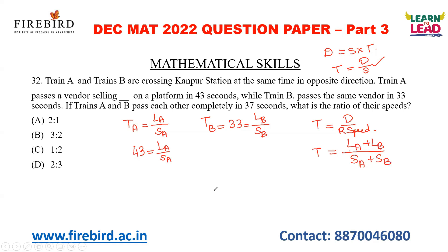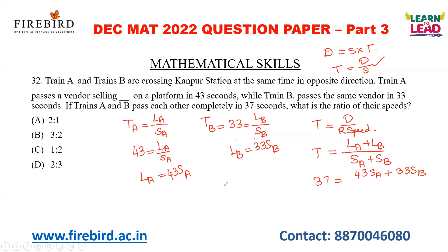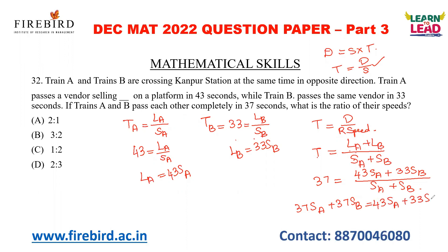They are asking: what is the ratio of their speeds? Represent length of Train A and Train B in terms of speed. From the earlier equations: length of Train A = 43 × speed of Train A, and length of Train B = 33 × speed of Train B. Substituting: (43 × speed of Train A + 33 × speed of Train B) / (speed of Train A + speed of Train B) = 37. Cross-multiplying: 37 × speed of Train A + 37 × speed of Train B = 43 × speed of Train A + 33 × speed of Train B.